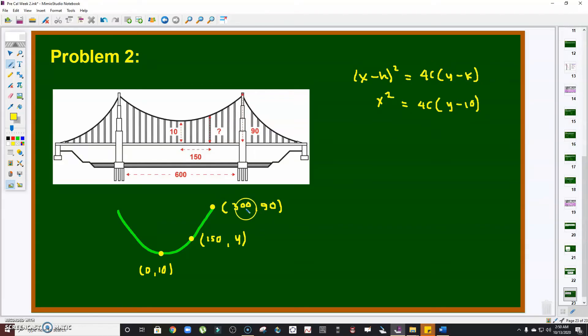Next, I have a point (300, 90). If I substitute (300, 90) for x and y respectively, I'll get c. Let's take it one at a time. Substitute (300, 90) for x and y respectively. That is 300² = 4c(90 - 10). So c will be 300 × 300 over 4 × 80, which is 1,125 over 4. This is the value of c.